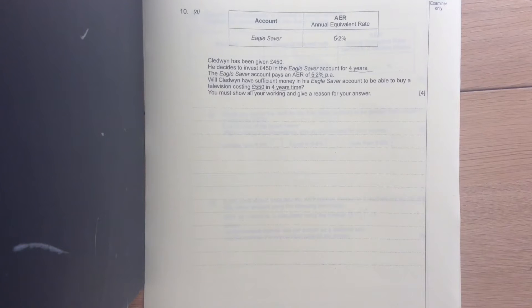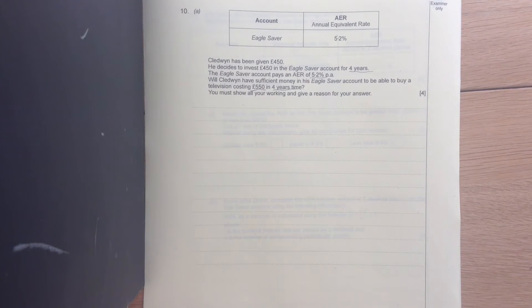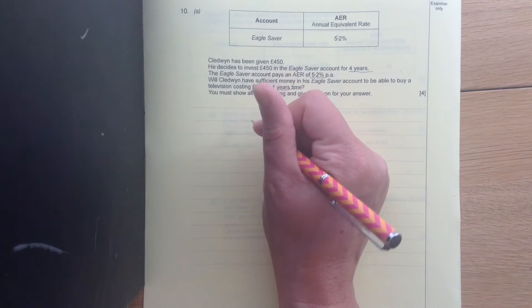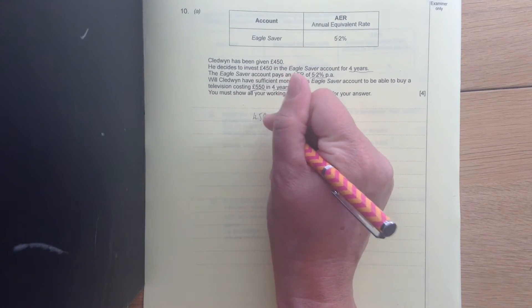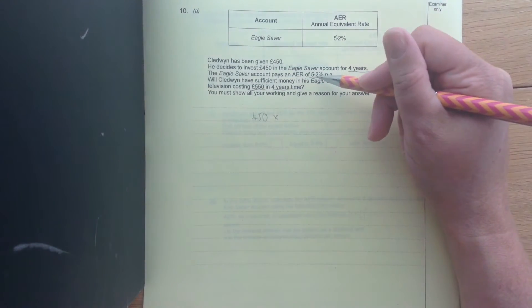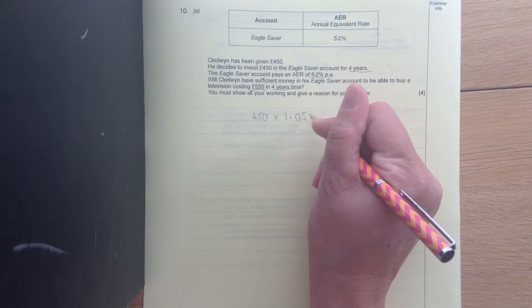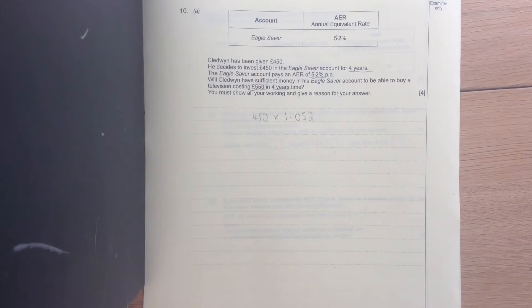So we're going to need to work out the interest that he's going to receive on the £450 over 4 years. We've got £450 times by, well the percentage is 5.2, so that's going to be 1.052 for our multiplier, to the power of 4 because it's over 4 years.